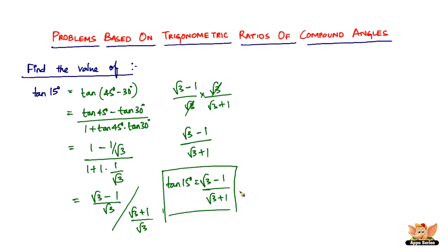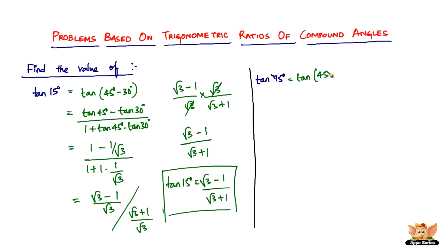Similarly, let's quickly also solve for tan 75 degrees — not very different from this. Instead of 45 minus 30, it's going to be 45 plus 30. So it's tan of 45 degrees plus 30 degrees.